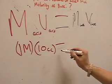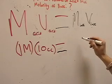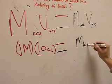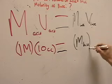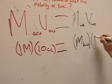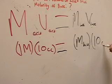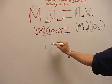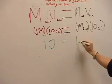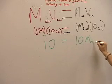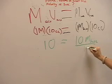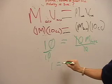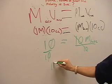We have the molarity of the acid equal to 1 molar, the volume of the acid as 10 cc's, the molarity of the base is still unknown, and the volume of the base used in the pipette was 10 cc's. After writing down this information, it is very easy to solve for the molarity of the base. We calculate: 1 × 10 = molarity of base × 10. We divide both sides by 10 to find that the molarity of the base equals 1 molar.